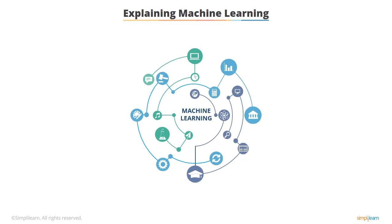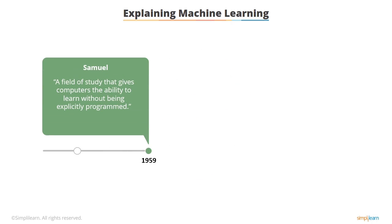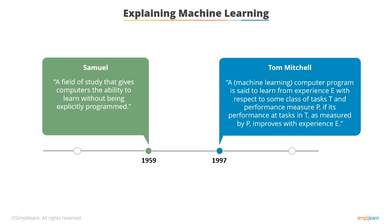Machine learning can be seen as building blocks to make computers behave more intelligently. In 1959, Arthur Samuel defined machine learning as: 'A field of study that gives computers the ability to learn without being explicitly programmed.' Later, in 1997, Tom Mitchell gave another definition more useful for engineering purposes: a machine learning computer program is said to learn from experience E, with respect to some class of tasks T and performance measure P, if its performance at tasks in T, as measured by P, improves with experience E.